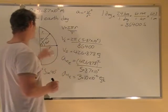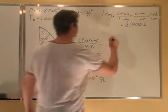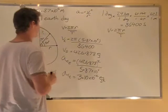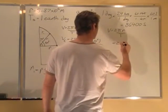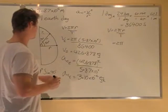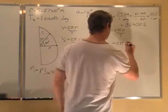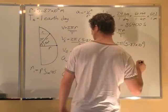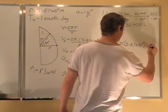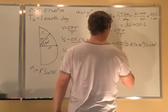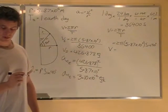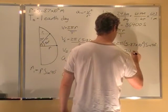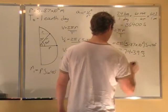So we do the exact same thing to figure out what our centripetal acceleration is at 40 degrees. I can say v equals 2πr over T. And I can plug in 2π. Radius is r, which is 5.87 times 10 to the 6, times sine 40. So v at 50 degrees north is 274.39 meters per second.